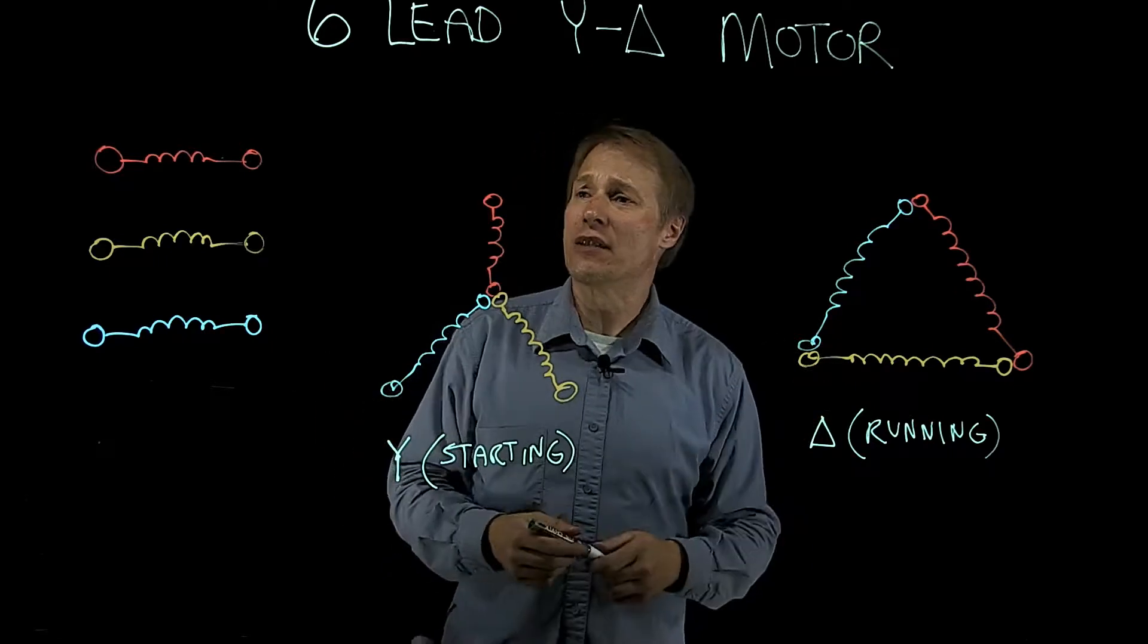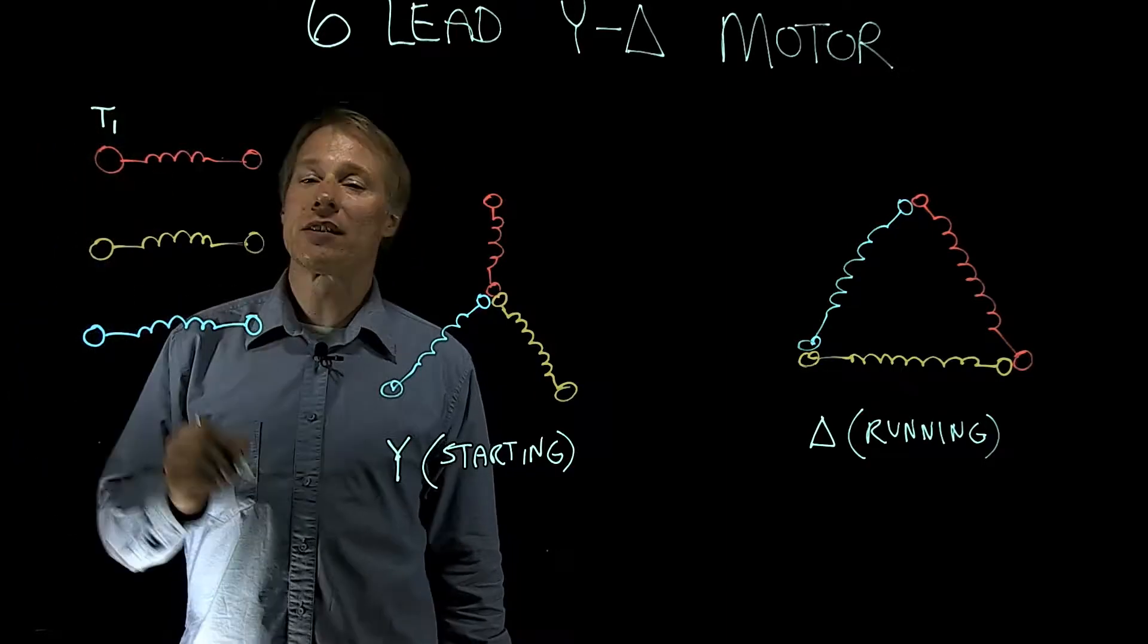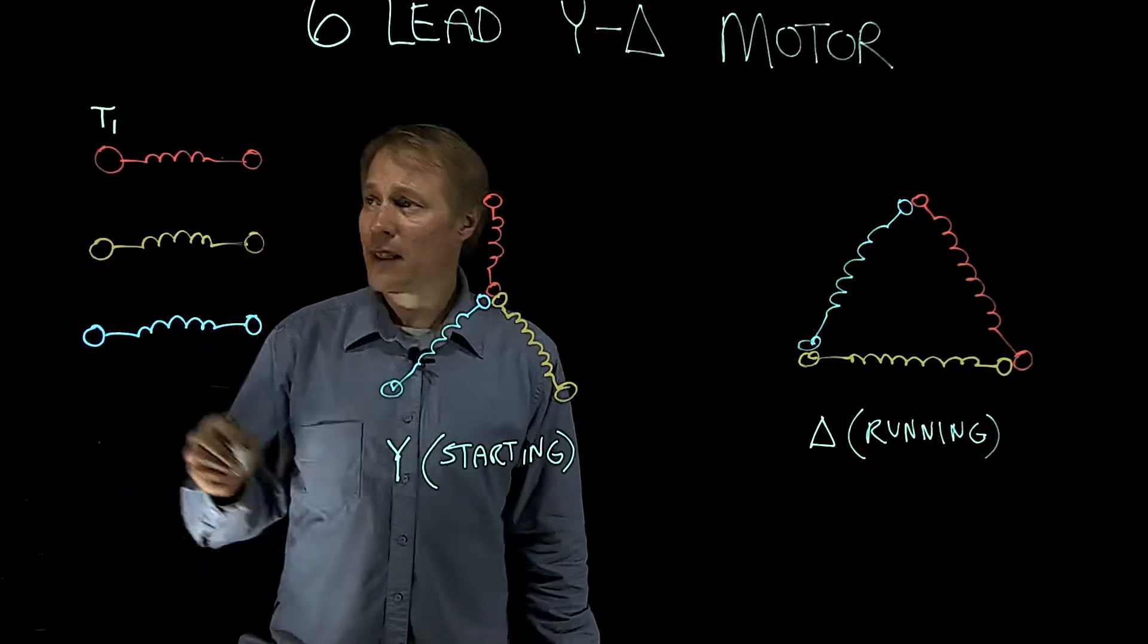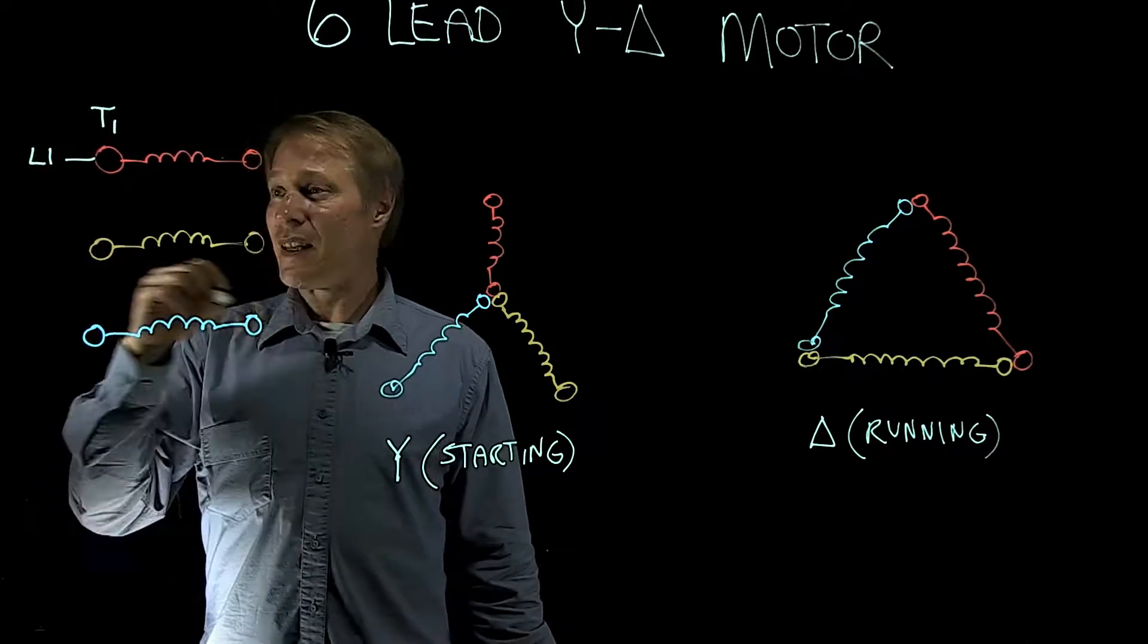So let's just look at the labeling. So let's start with phase A here. This lead here is labeled T1, and T1 always connects to line 1, and then let's move on.